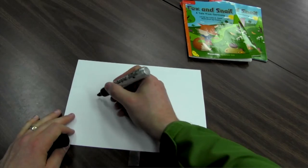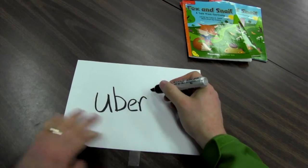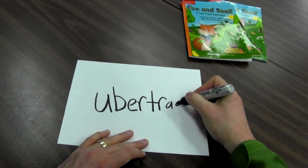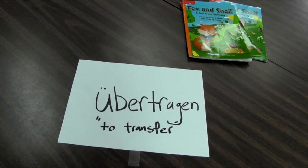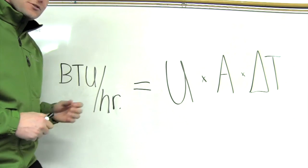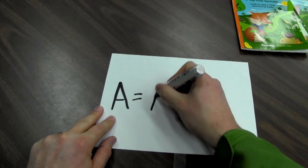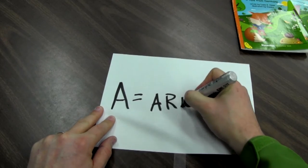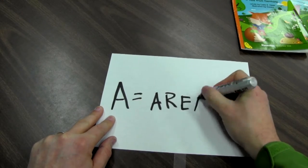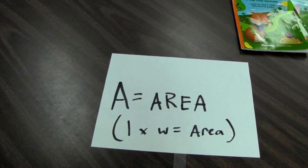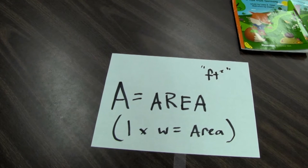This U is a really interesting one. It comes from the German word Ubertragen, which means transfer. Since we're talking about heat transfer, that makes sense. Now this A stands for area — the area of a wall, a ceiling, a floor, or a window that our heat is transferring through.